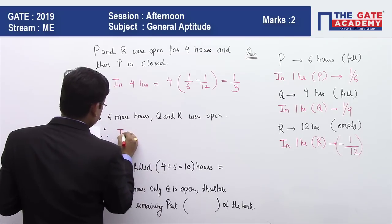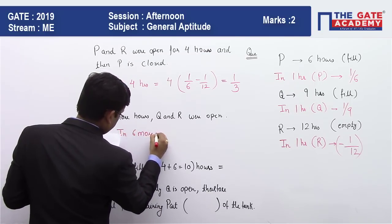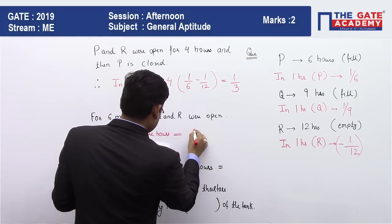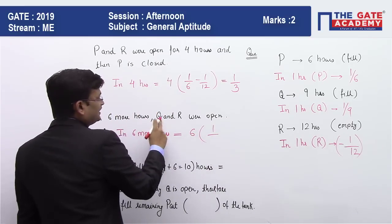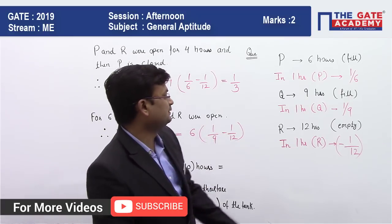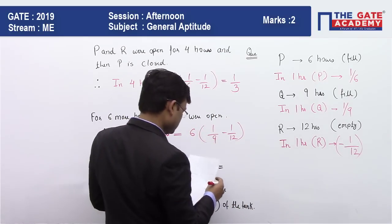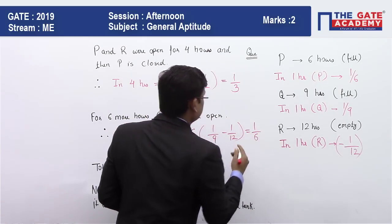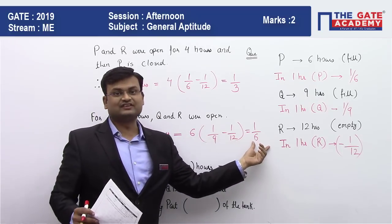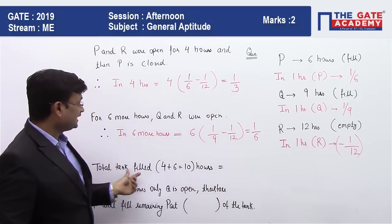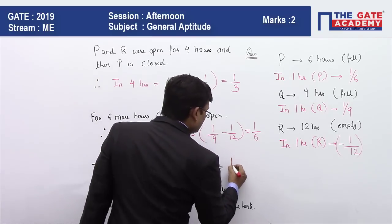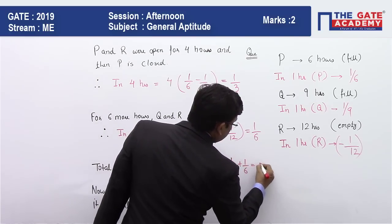So in these six more hours, how much tank will be filled? Q is filling at one by nine in one hour, this is minus one by twelve because R is emptying, that's why minus sign, which is coming as one by six. Four hours filled one third part and six more hours filled half of one third part. So total tank filled in these first four hours then six more hours, totally ten hours, will be equal to one by three plus one by six, which is half.